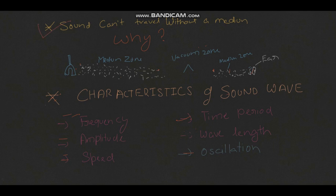Sound cannot travel without a medium. If we take an example with two zones — a medium zone and a vacuum zone — the tuning fork produces sound that travels through the medium zone particles, but once it reaches the vacuum zone, there are no particles to carry the sound forward, so it cannot reach the listener's ear.